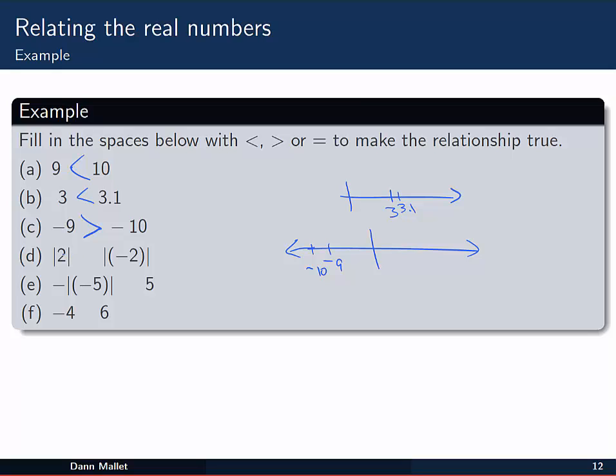Alright, this next one here, we've got a couple of symbols that you might not have seen. So these vertical lines around a number. Vertical lines, those are called absolute value lines. Now what do they mean? Well, absolute value just means the magnitude of the number, or the number without its sign. So the absolute value of 2 is just 2. But the absolute value of minus 2, that's the number without its sign, is 2 as well. So the absolute value of 2 and the absolute value of minus 2, they're the same thing. So we're going to say that those are equal to each other.